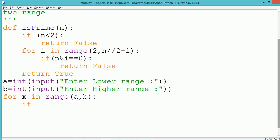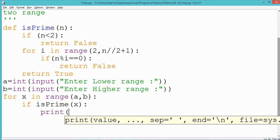From the user, two range of values will be accepted, which is a lower range and the higher range, in between which the prime numbers will be displayed. The variables used are a and b.